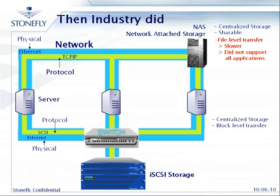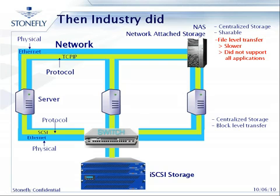The next thing the industry did was bring in iSCSI. With iSCSI, the physical interface and the networking are the same — you're running over Ethernet. The protocol running over Ethernet is SCSI, so you get block-level transfer. You have centralized storage, and the switches are standard switches used for networking. Because of the commonality between networking infrastructure and iSCSI infrastructure, it forced the price of switches much lower than fiber channel.